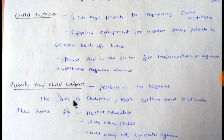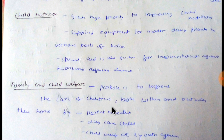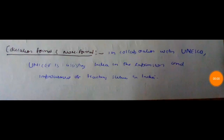Family and child welfare — the purpose is to improve the care of children both within and outside their homes through such means as parent education, day care centers, child welfare agencies, youth agencies, and clubs.